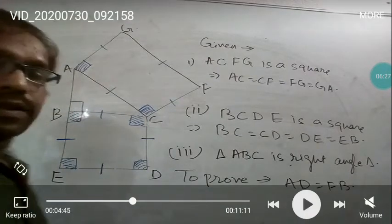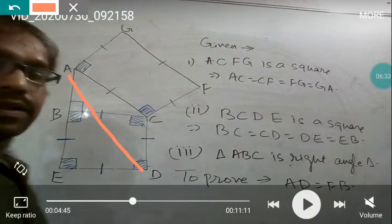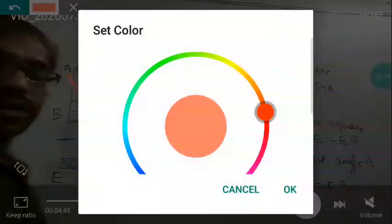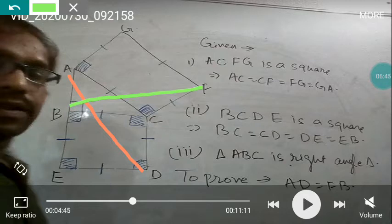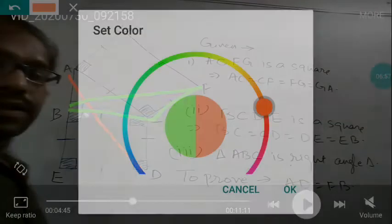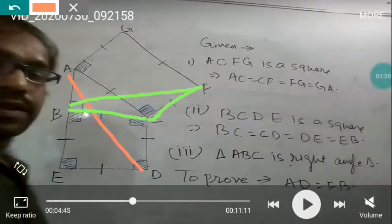In this figure, AD is not directly given. So here is our AD, and here is our FB. Now see: FB is a part of this triangle and AD is a part of this triangle. So we have to use these two triangles in our calculation.